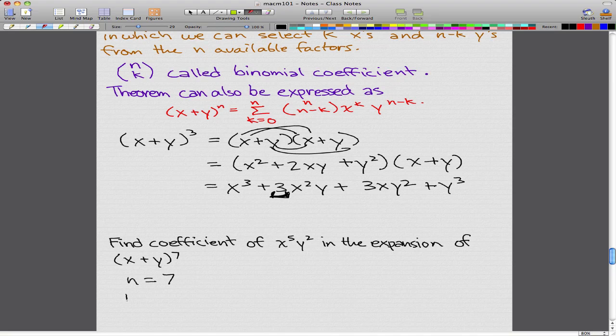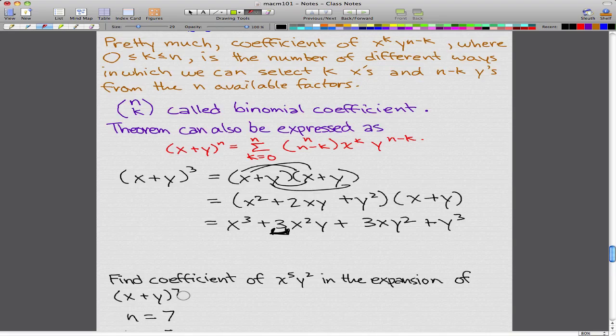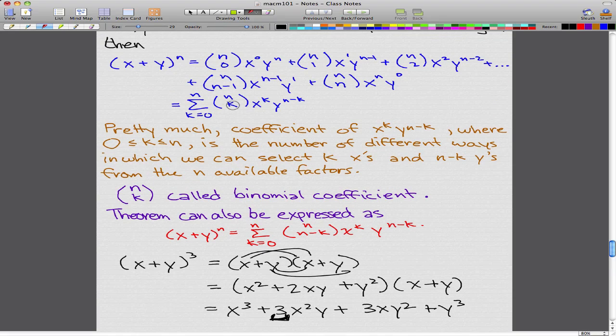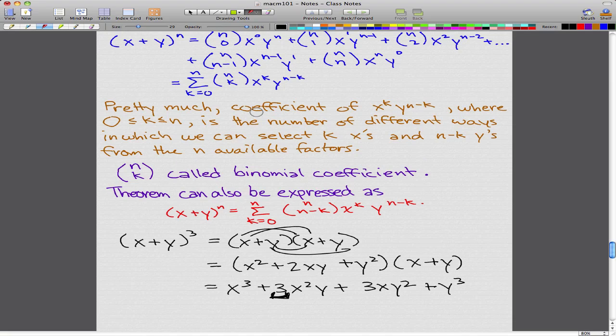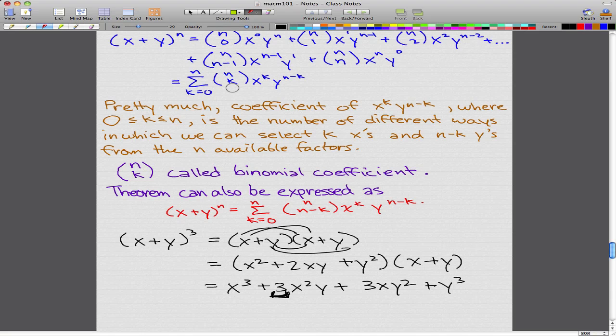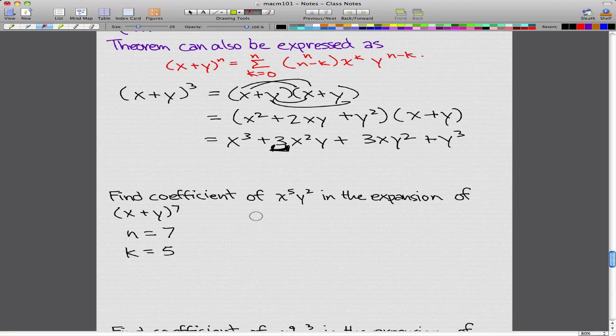Because what we're doing is we're following this equation, right? n is 7, and k is equal to this, so k is 5. So, I guess it's better to actually write it down so we can actually see it properly.